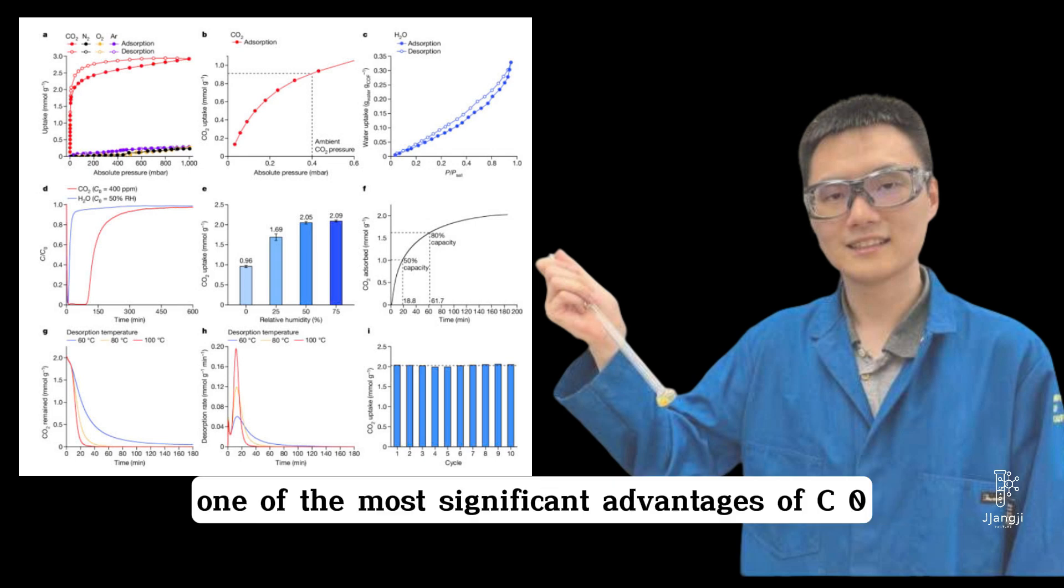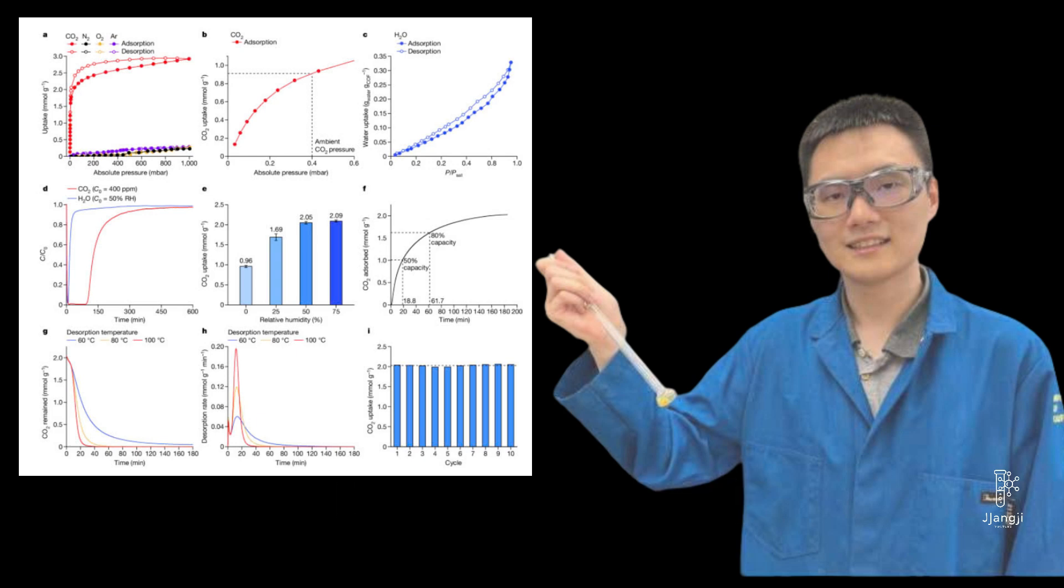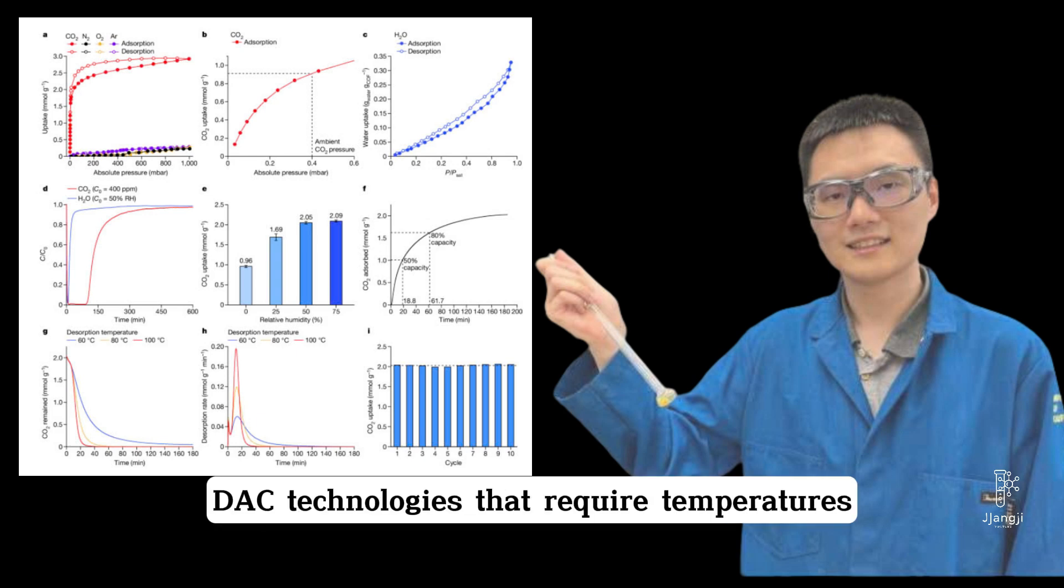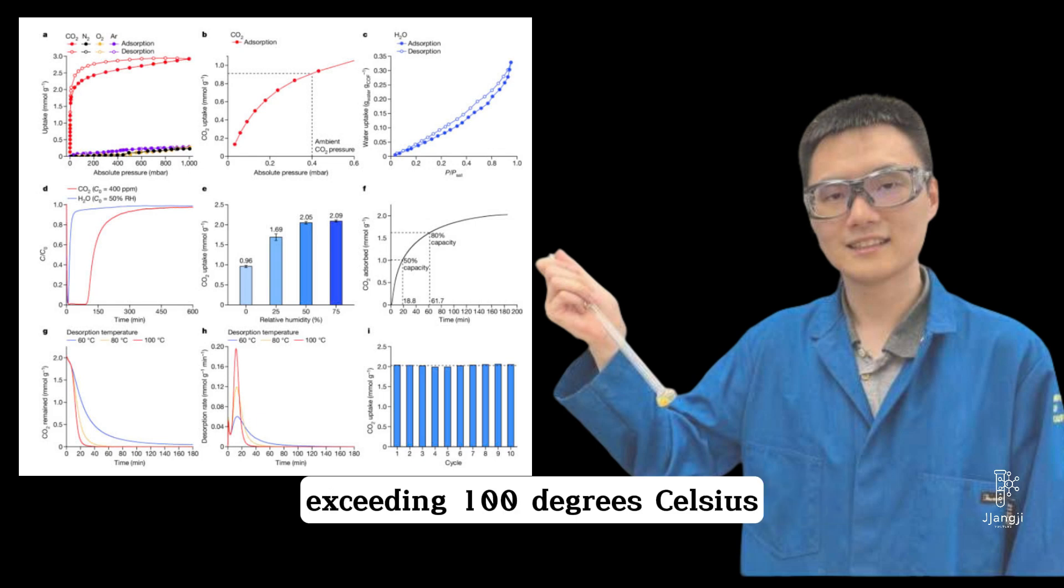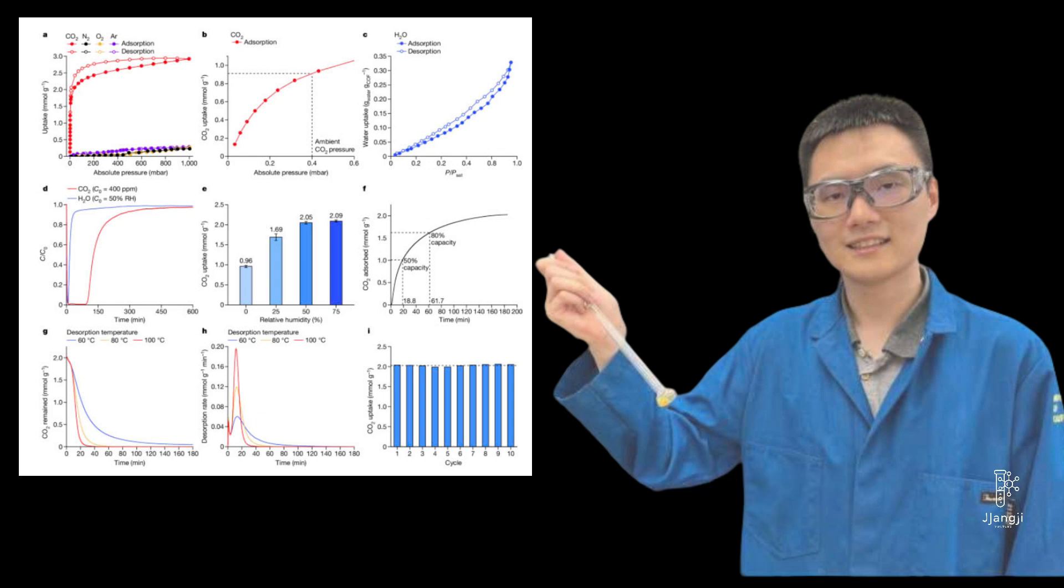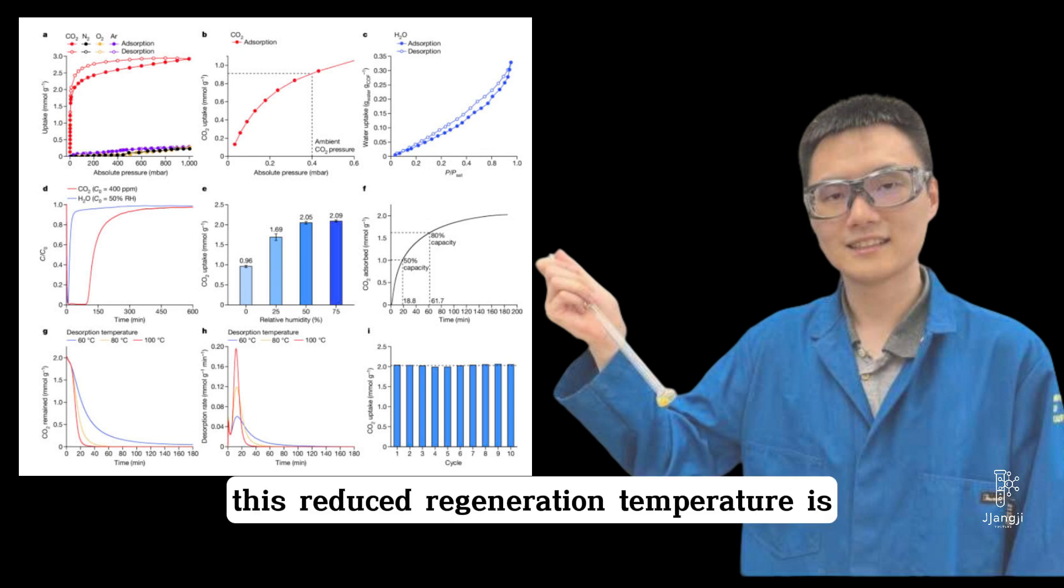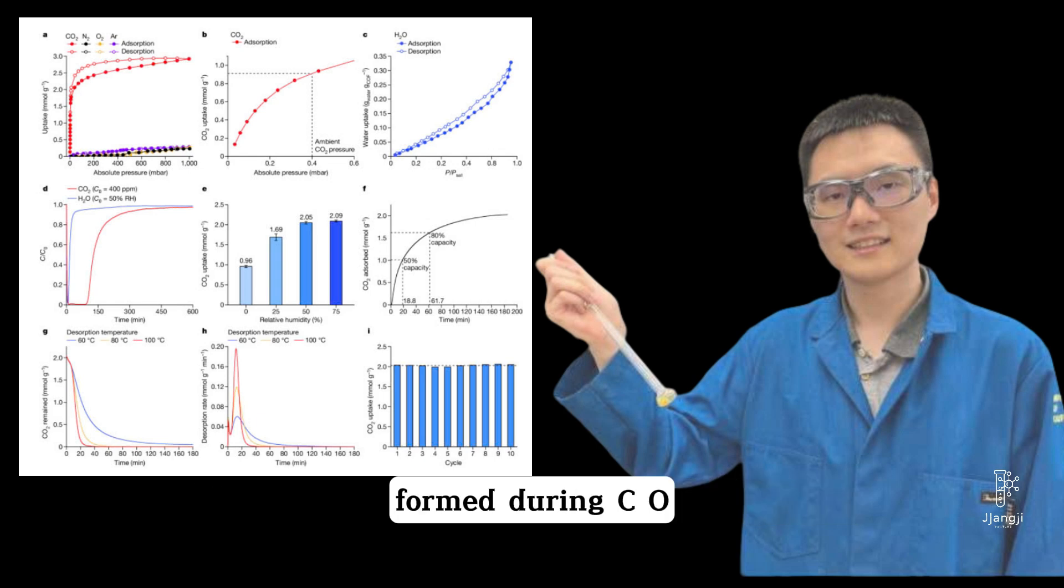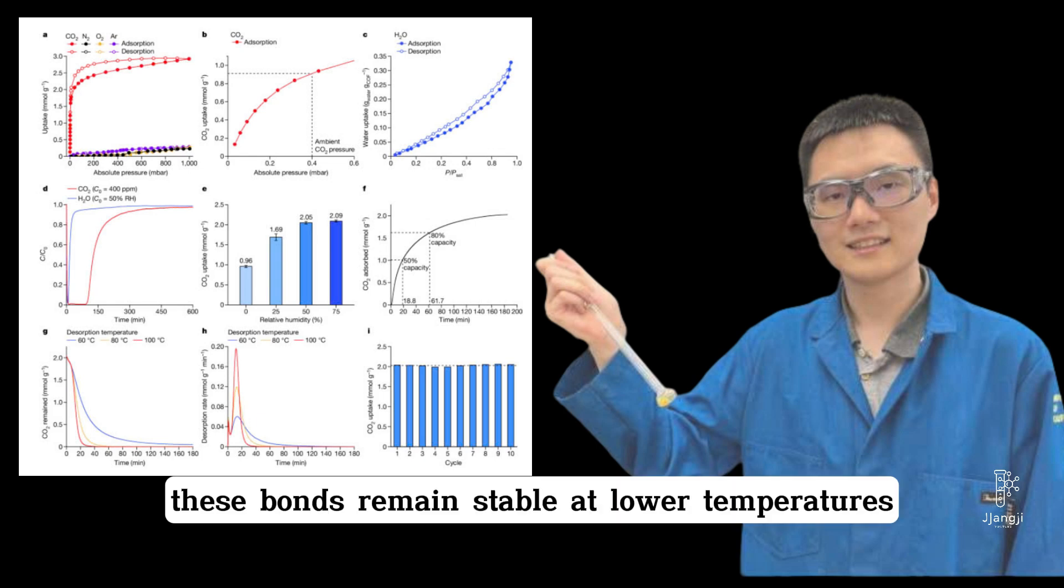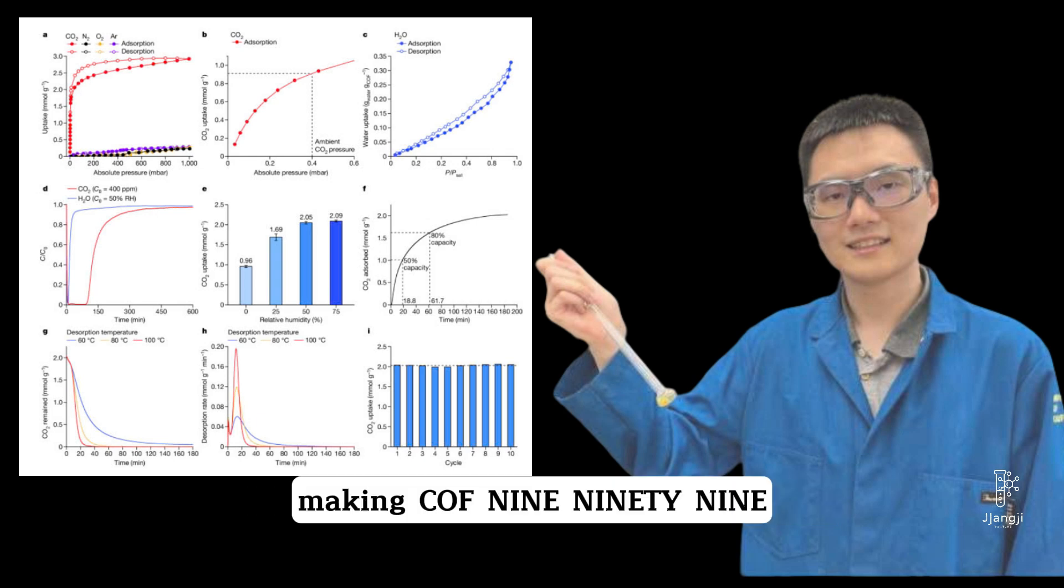One of the most significant advantages of COF-999 is its energy efficiency. Unlike conventional direct air capture (DAC) technologies that require temperatures exceeding 100 degrees Celsius to release captured CO2, COF-999 can perform this process at a much lower temperature of approximately 60 degrees Celsius. This reduced regeneration temperature is enabled by the thermodynamic stability and kinetic efficiency of the carbamate bonds formed during CO2 capture. These bonds remain stable at lower temperatures but dissociate rapidly at higher temperatures, allowing for quick and energy-efficient CO2 release. This feature significantly reduces the system's overall energy consumption and operational costs, making COF-999 a viable option for large-scale applications.